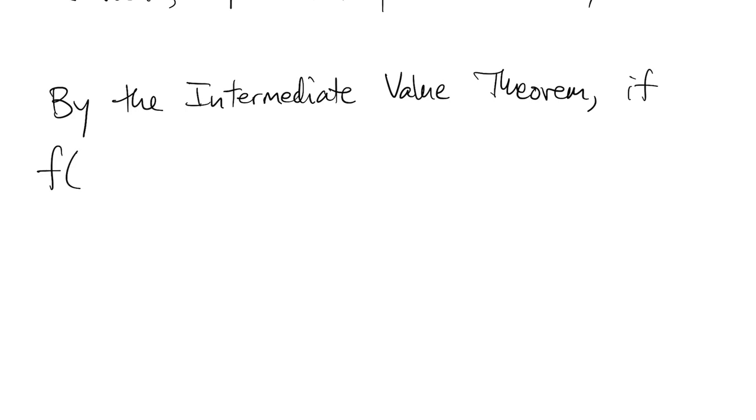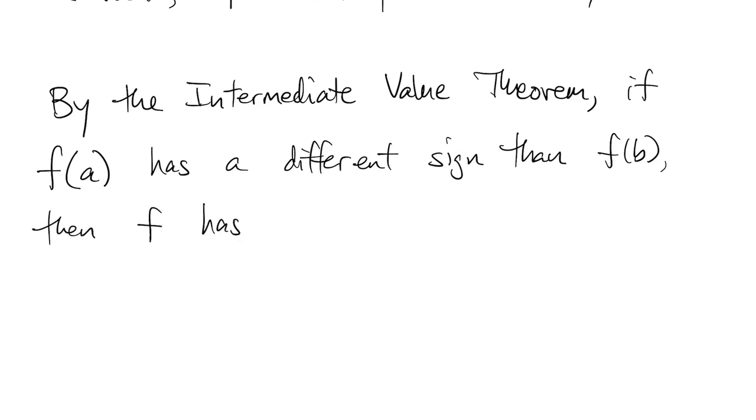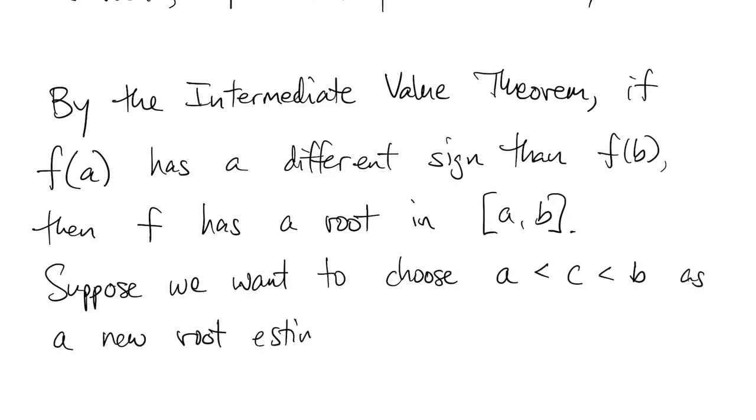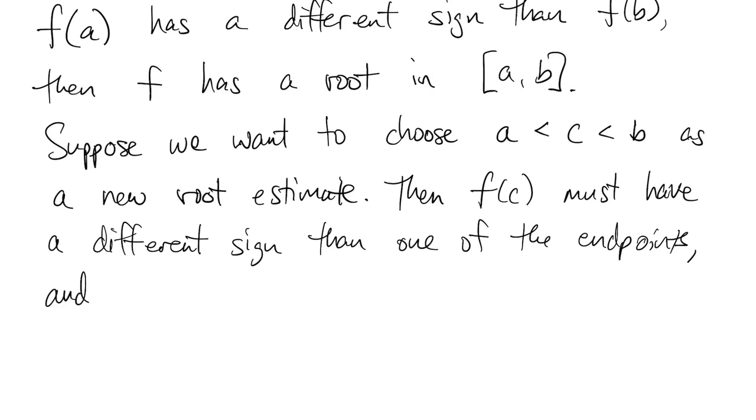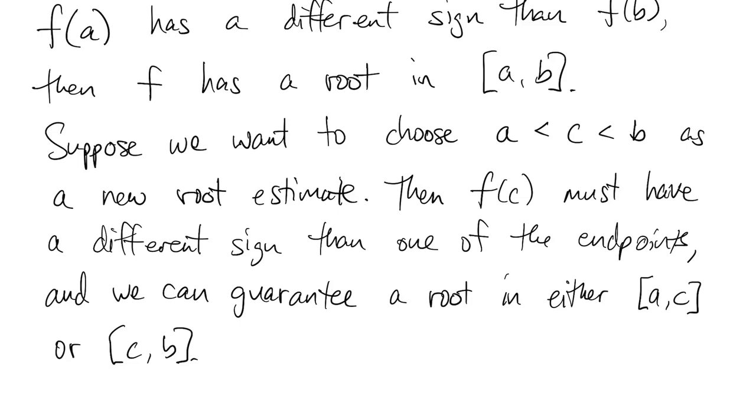But we do have one thing left to appeal to. Going back to calculus and the intermediate value theorem. If f has a different sign at a than it does at b, then f must take the value zero somewhere in the interval from a to b. Maybe more than once, but at least once. So now suppose we think c is a new root estimate somewhere in that interval. It has to agree with one of the signs at a and b, and it has to disagree with one of them. So we can pick the interval on which there is still a change of sign, either a to c or c to b. And then we know that there must be a root in that interval. This can be combined with the other ideas to give a robust algorithm. And that's what MATLAB does.